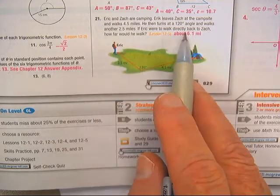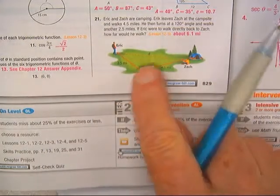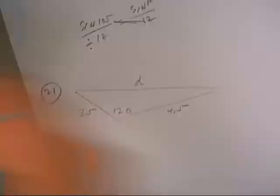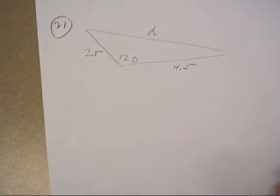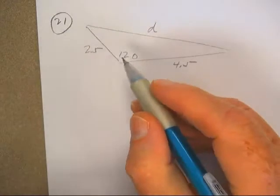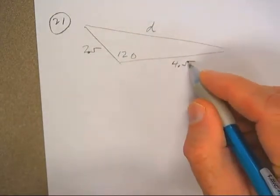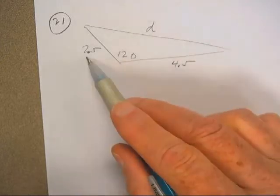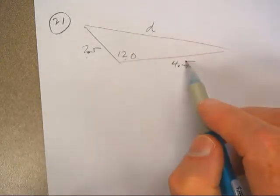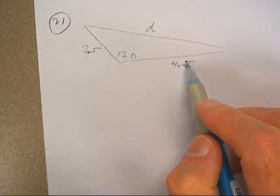I took that triangle and I just transferred it right over here. And this is side angle side. Well, side angle side is the law of cosines.